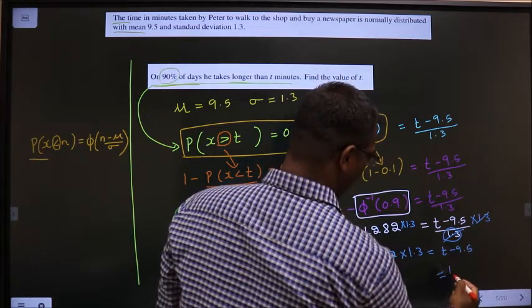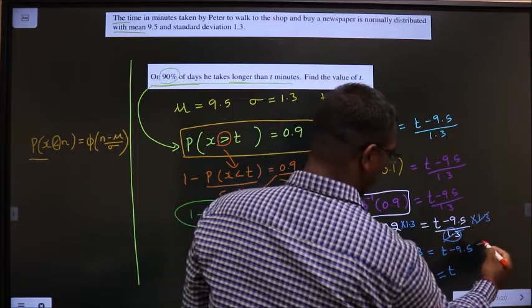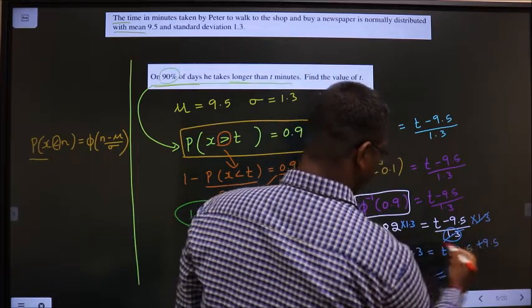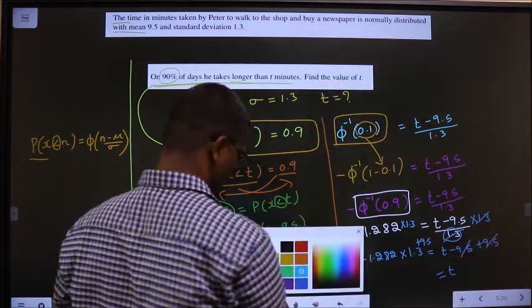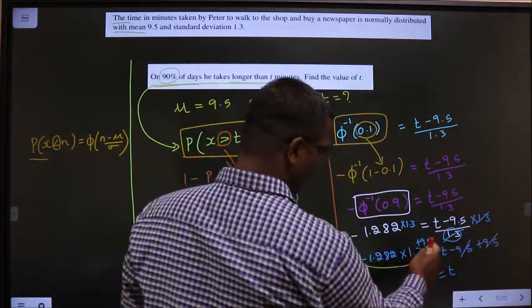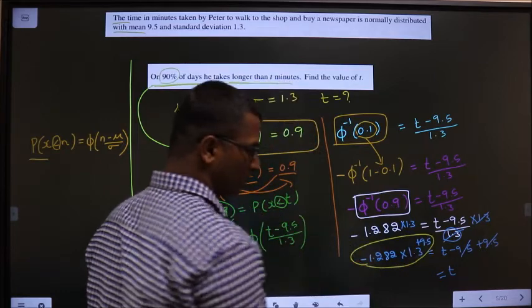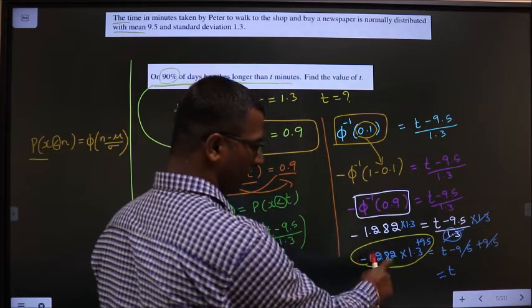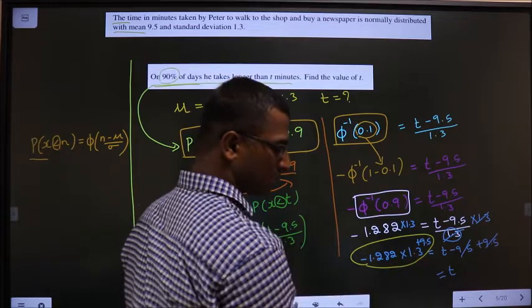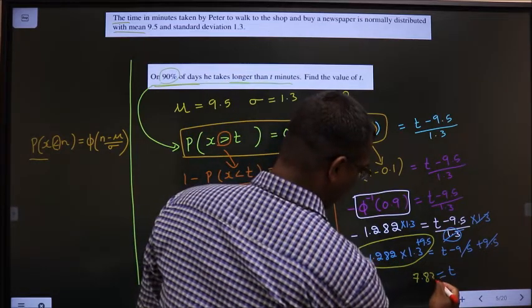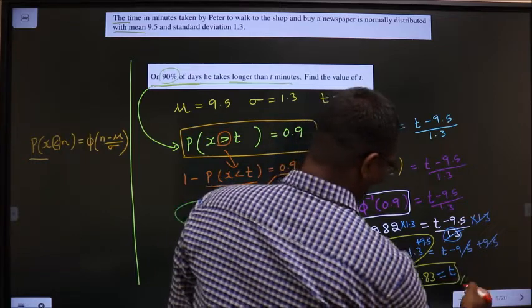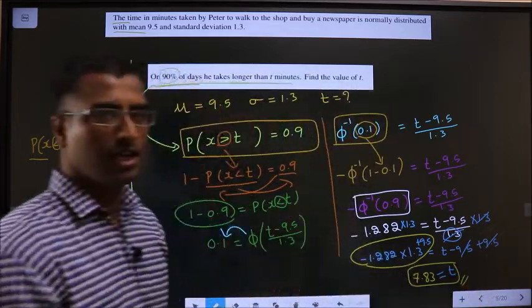Now, I have to get T. For that, add 9.5 on both sides. So, this gets cancelled. You put this entire thing at once in calculator: minus 1.282 into 1.3 plus 9.5. You should get 7.83. This is our answer.